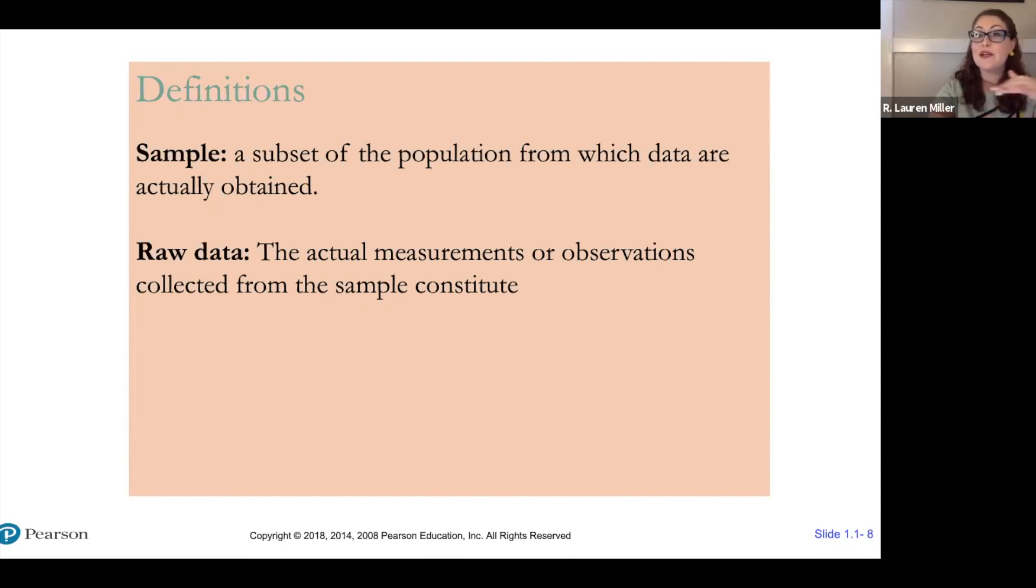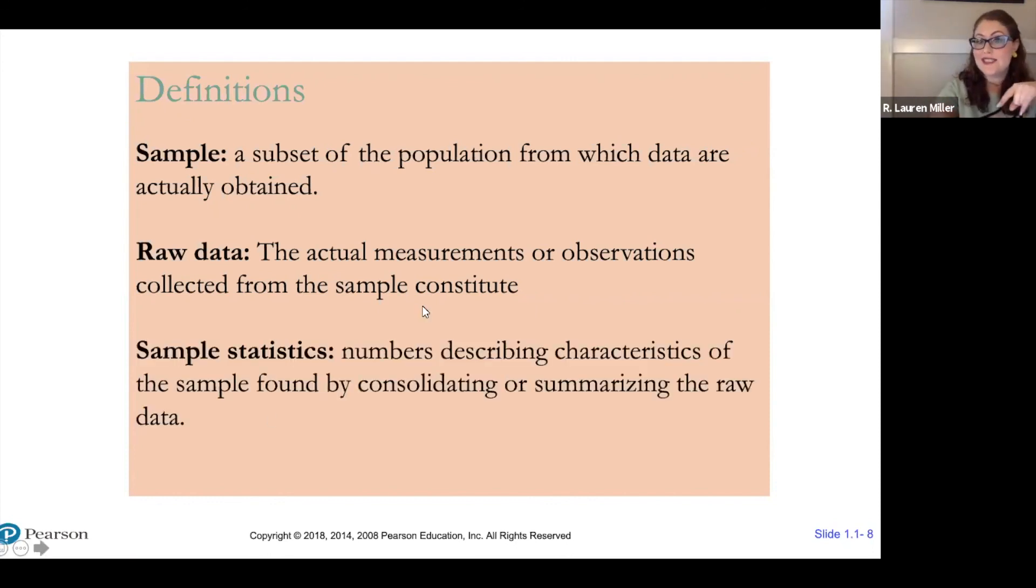If we were collecting people's height, that would be five foot four, my height five foot seven, six foot. We would use that raw data to calculate a sample statistic, such as taking the average or finding the mean. We're going to talk about all those things as this course goes on. The mean is the same thing as the average.